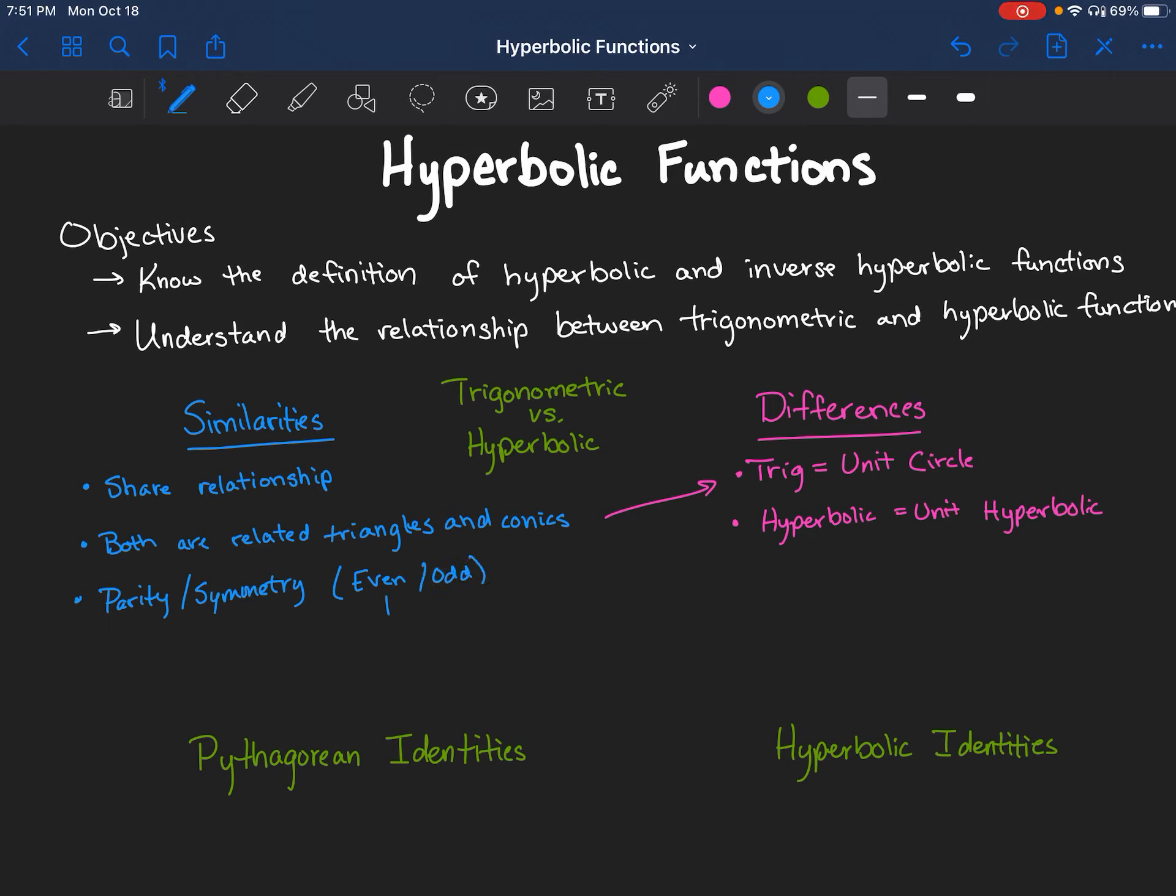the only even functions were cosine and secant. Well, the same thing happens to be true with the hyperbolic functions is the only two even ones are the hyperbolic cosine and hyperbolic secant. And the odd ones are everything else.